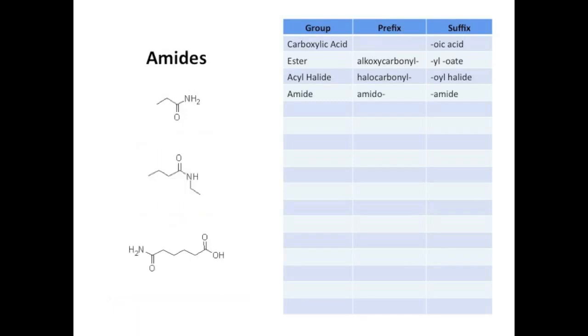Amides are pretty simple as well. You know these as peptides in biochem. The suffix -amide is added to the main chain, making the first example propanamide. If there is a substituent attached to the amino group, you designate that as N-alkyl, so number 2 would be N-ethylbutanamide. And number 3, the amide group does not take priority, so we name it as a substituent, taking the prefix amido, which means the molecule is called 6-amidohexanoic acid.